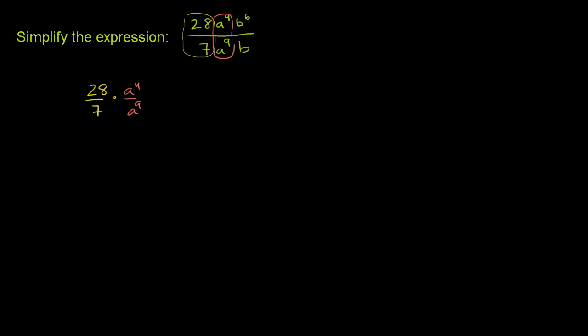I'm just rewriting what we did here, but I'm writing it as a product of three terms, instead of just one term over here. And then finally you have this last term over here, b to the sixth over b. So times b to the sixth over b.